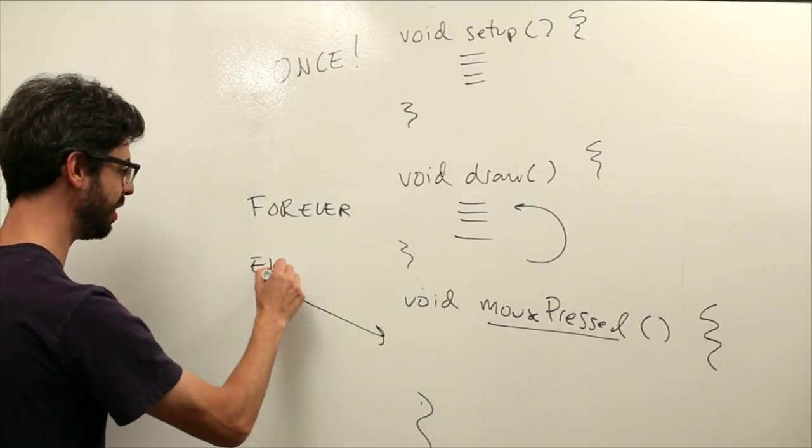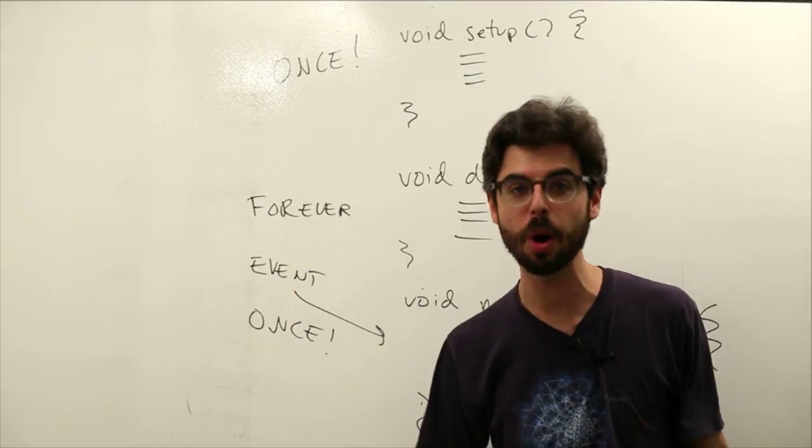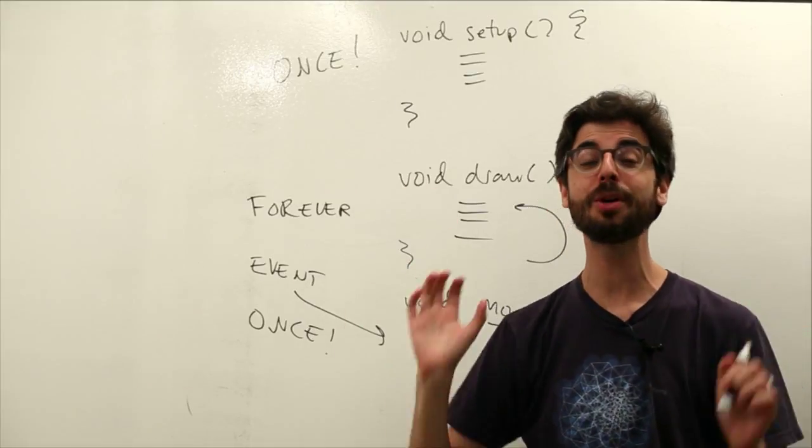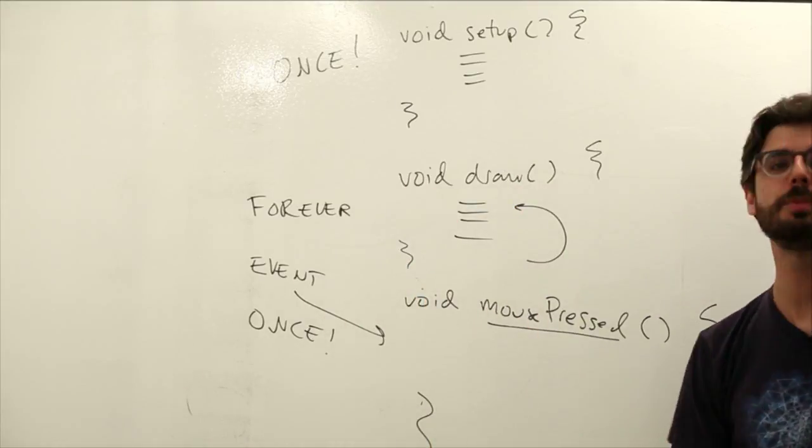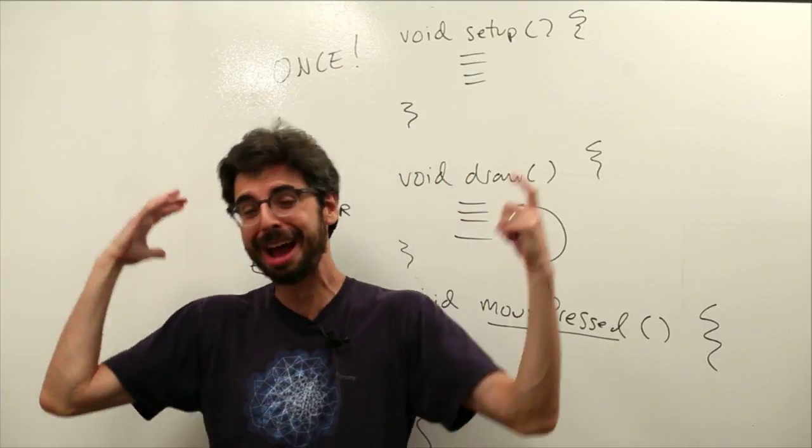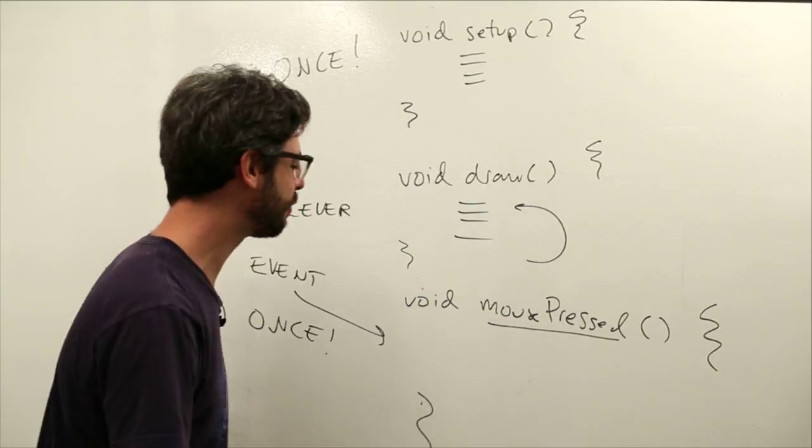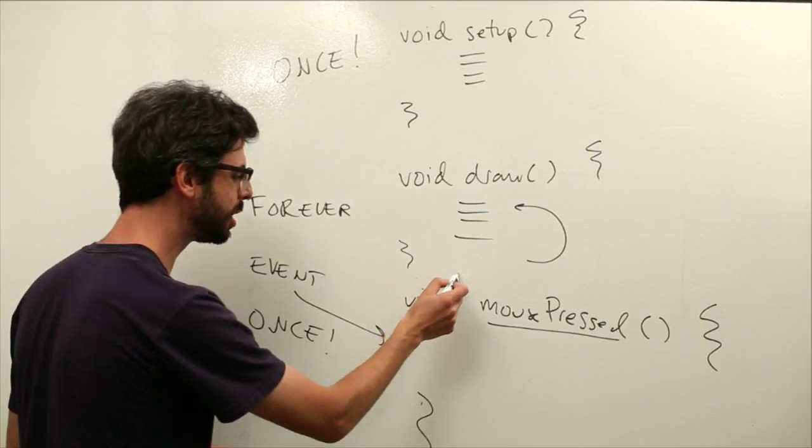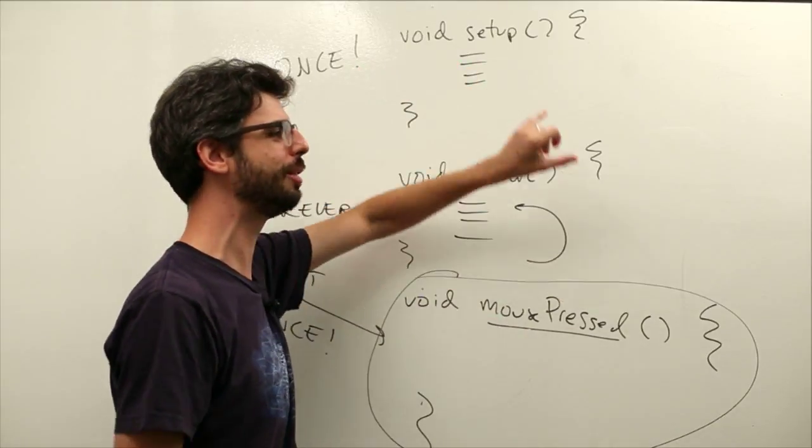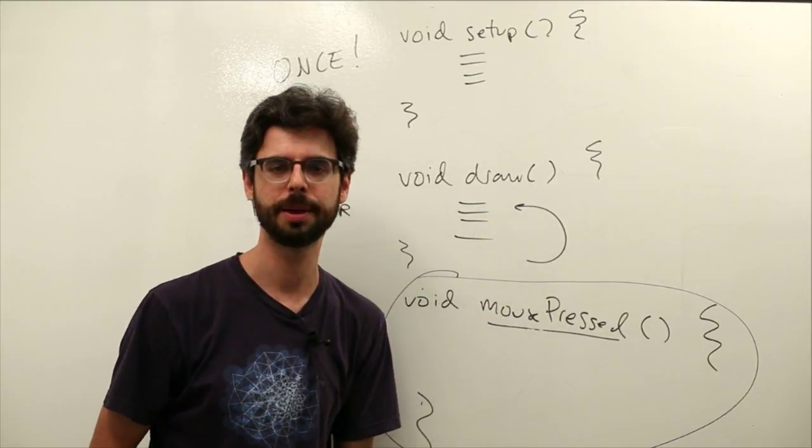This is an event. This, we can consider an event, and it also only happens once. Now, I don't mean once in the course of the whole program, but it executes once at the moment of the event. Setup truly happens only once when the program first begins. Mouse pressed might never occur. We could write the most amazing, sophisticated, beautiful code we've ever written in our entire life, put it here, and if no one clicks the mouse, it will never happen. This only happens when the mouse is pressed. The syntax remains the same as these blocks of code, but the difference is the name of this method that we're implementing - this block of code is called mouse pressed.